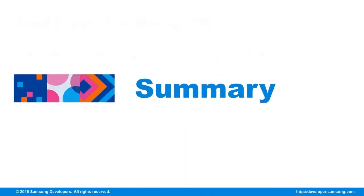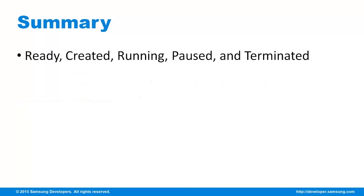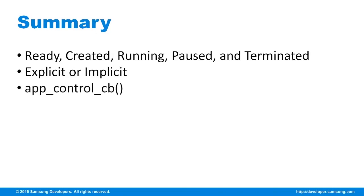Now let's wrap up this episode. The application states are: ready, created, running, paused, and terminated. Callbacks are responsible for moving from one state to another. Calling the app to launch can either be explicit or implicit — directly specify it or offer parameters of similarity. The app control callback takes control of the flow of the app while it is in use. It enables information relay and, more importantly, launching one app from another.